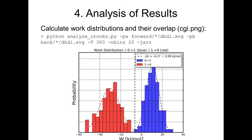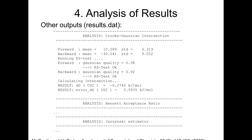The PMX package includes a script called analyze_crooks.py, which calculates the delta G of the mutation using several methods. One output file is CGI.png, showing the work distributions for forward and backward transitions in red and blue. The intersection of two Gaussian curves fitted to those distributions gives an estimate of delta G using the Crooks-Gaussian intersection method. The script also outputs a results.dat file with statistics about fit quality, and analyzes the data using the Bennett acceptance ratio and the Jarzynski estimator.